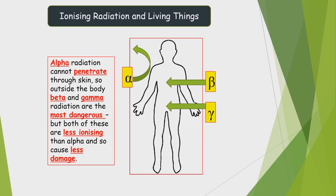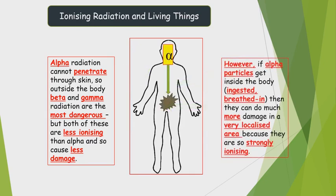Ionizing radiation and living things: alpha radiation cannot penetrate through skin, so outside the body, beta and gamma radiation are most dangerous — though both are less ionizing than alpha so they cause less direct damage. However, if alpha particles get inside the body — ingested or breathed in — they can do more damage in a very localized area because they are strongly ionizing.